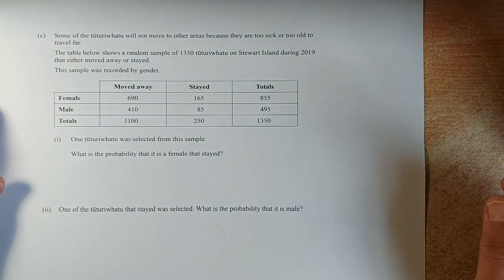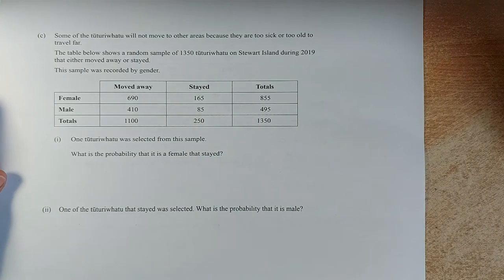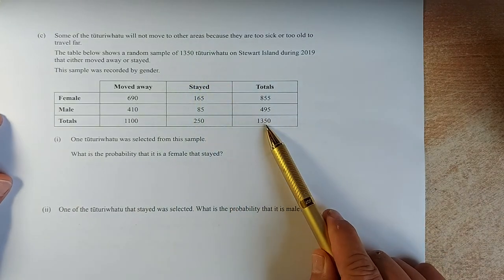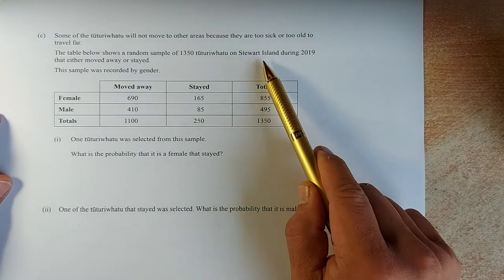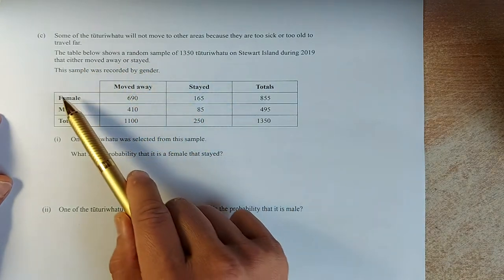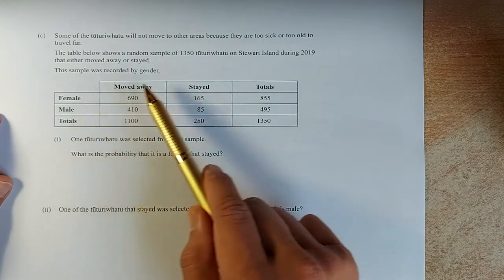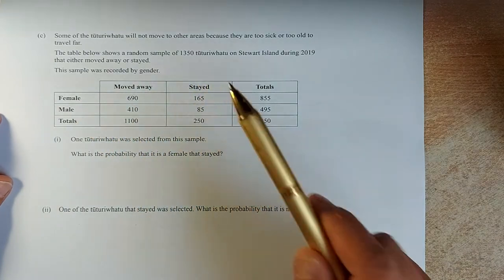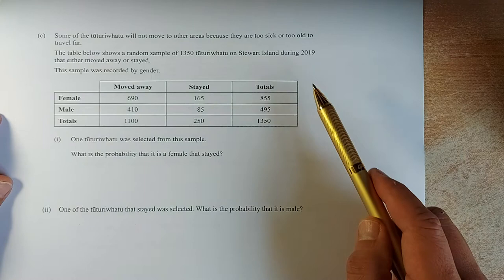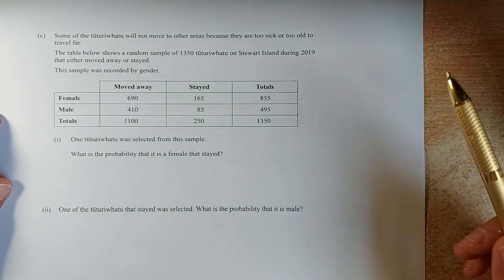Some of the Tuturiwhatu will not move to the other areas because they are too sick or too old. The table shows a sample of 1350 on Stewart Island during 2019 that either moved away or stayed. This is a 2x2 table, male and female move away and stayed. As usual, in a 2x2 table, you have to put the totals, the row totals and the column totals.